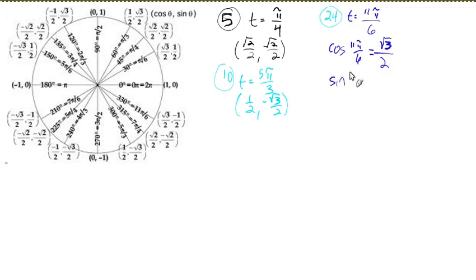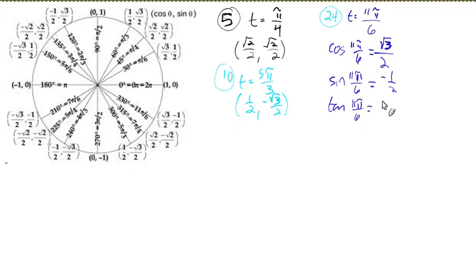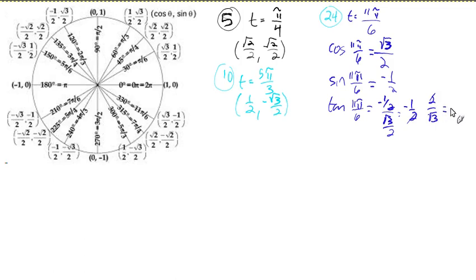The sine of 11 pi over six is negative one-half. The tangent of 11 pi over six is sine over cosine, or y over x, which is negative one-half over root three over two. When we divide by a fraction, we multiply by the reciprocal: negative one-half times two over root three gives us negative one over root three. We rationalize the denominator by multiplying by root three over root three, giving us negative root three over three.